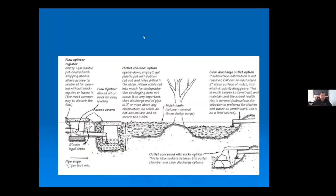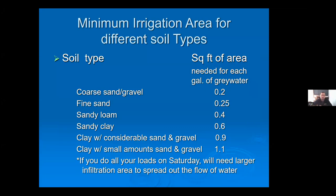Here's a schematic from the book 'Gray Water Oasis' showing how you orient the mulch basin in relation to the tree's root zone. The size of the mulch basin depends on your soil type — the more clay content, the larger your mulch basin should be. Clay soil requires a basin four or five times bigger than heavy sand soil to accommodate the slower water percolation.